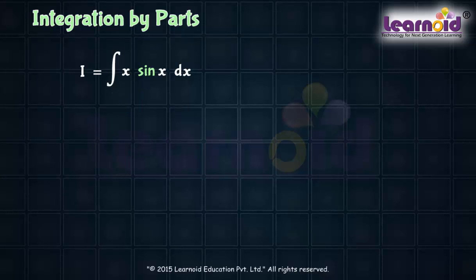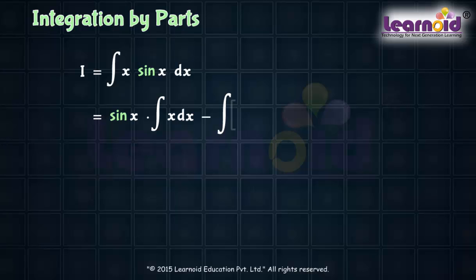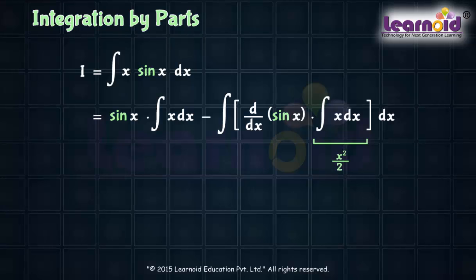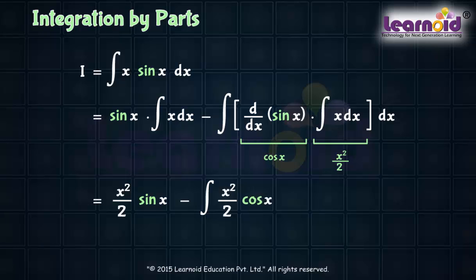Now using formula of integration by parts, we can write sin x into integration of x dx minus integration of d by dx of sin x into integral of x dx. Integral of x dx is x squared by 2 and differentiation of sin x is cos x. Substituting these values, we will get x squared by 2 into sin x minus integral of x squared by 2 into cos x dx.